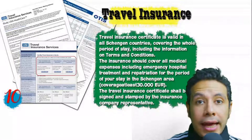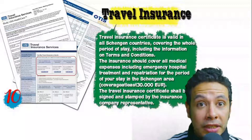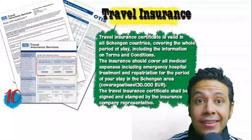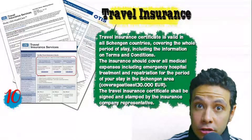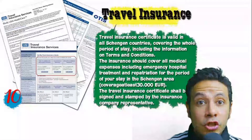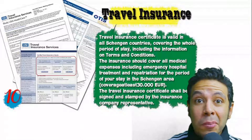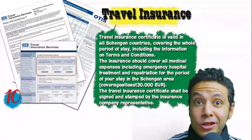Many countries, especially Schengen area countries, require you to provide travel insurance. You have to be careful and apply through officially accepted companies. For Schengen area countries, the insurance coverage must be at least 30,000 euros. In general cases you can apply for this insurance online.